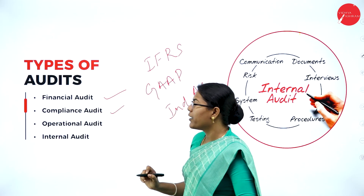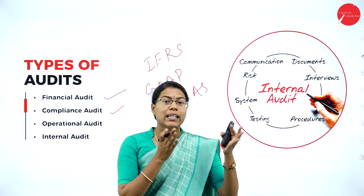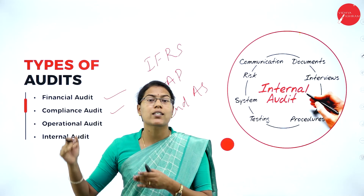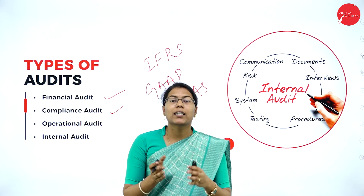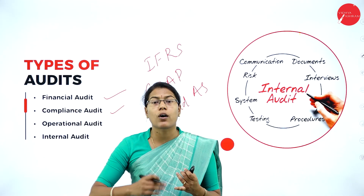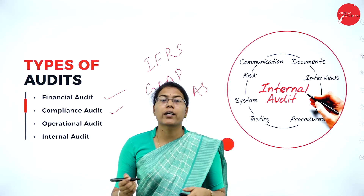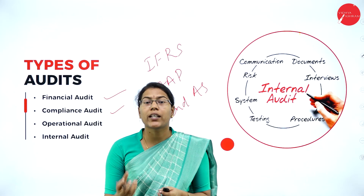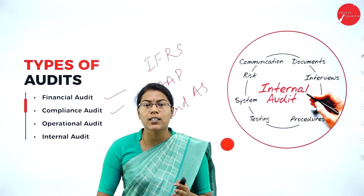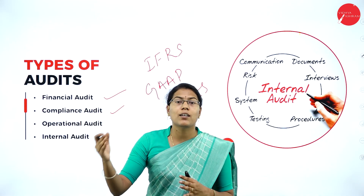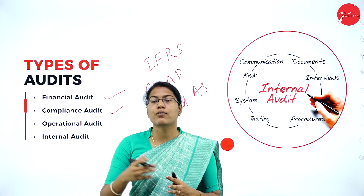Next we have compliance audit. Compliance audit is all about examining whether the company is in compliance with various laws and regulations of that particular country. The compliance audit checks whether the company is following internal policies or whether it is adhering to external rules and regulations. This type of audit is necessary to ensure that the company is following the rules, regulations, and policies within the organization, as well as adhering to external laws and regulations that industries are required to follow.